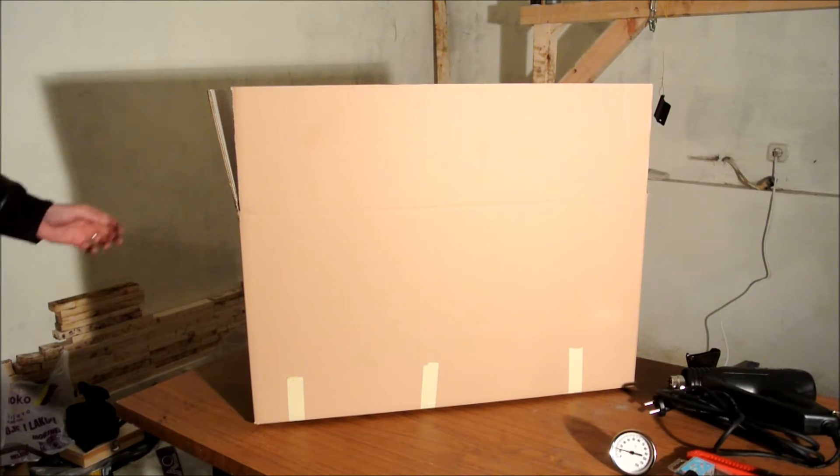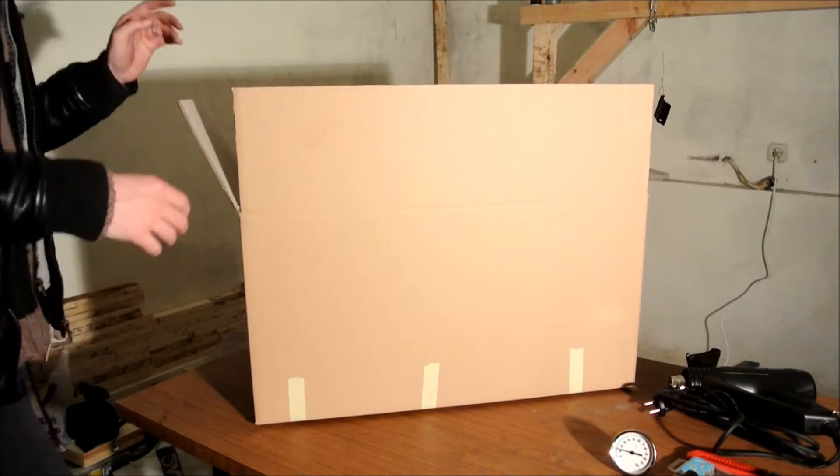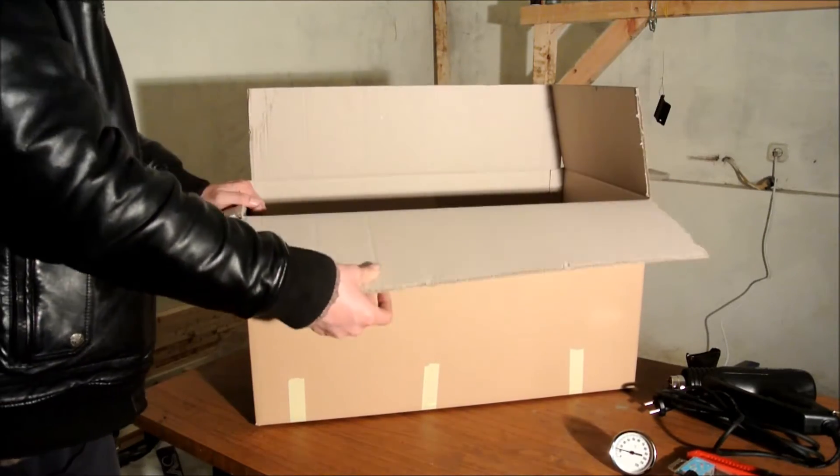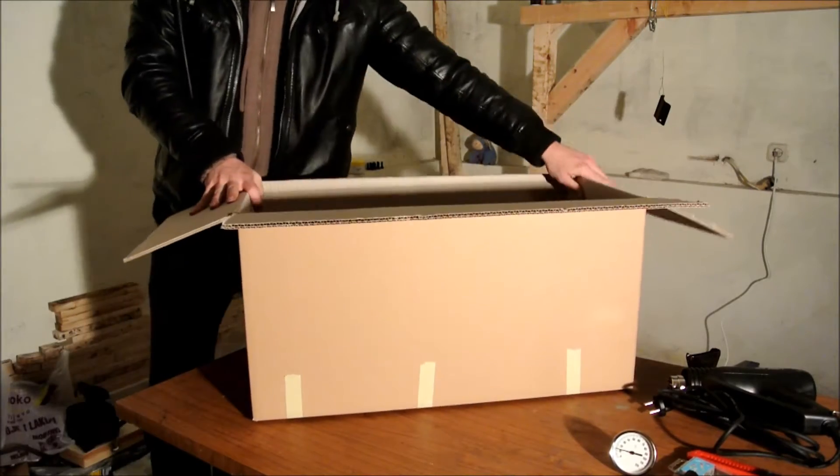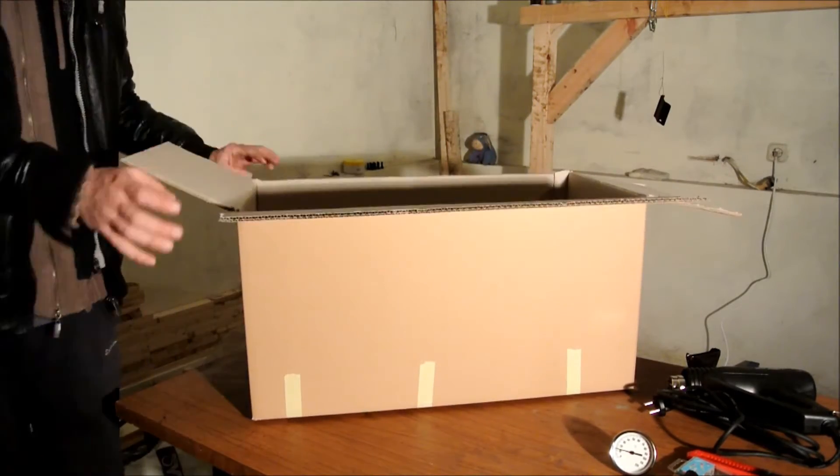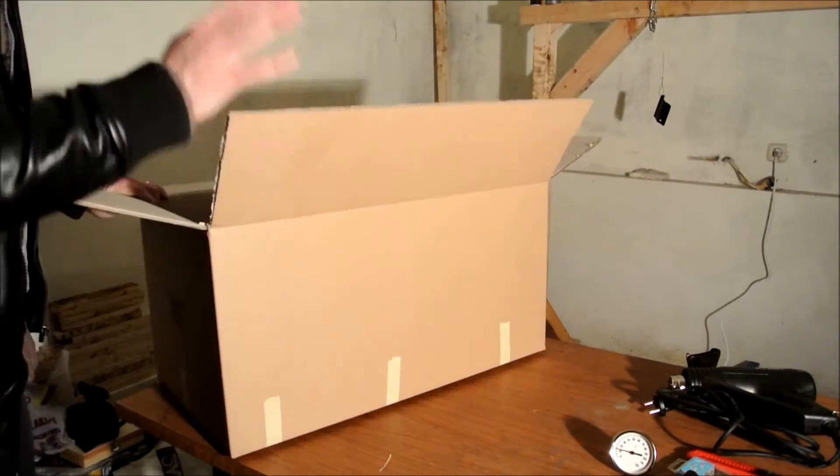The first step is to basically cut off these parts of the box. The box will be inverted and you will not need this. The box will be put on the table like so.